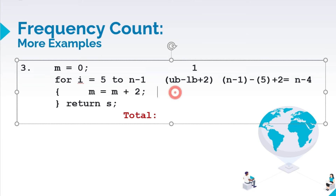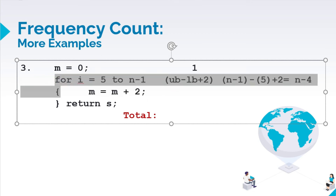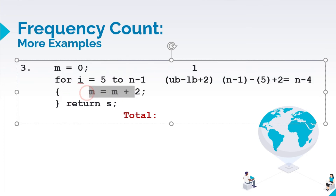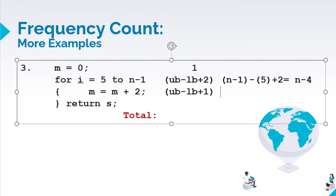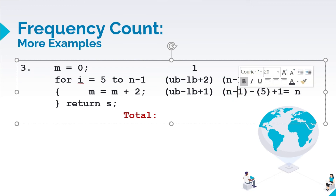Then next, this is a statement inside the for loop. So therefore, we'll use the formula upper bound minus lower bound plus 1. The upper bound referred to here is still from our for loop condition. So upper bound is n minus 1, minus lower bound 5, plus 1. Our constants: negative 1 minus 5 is negative 6, plus 1 is negative 5. So the answer is n minus 5.